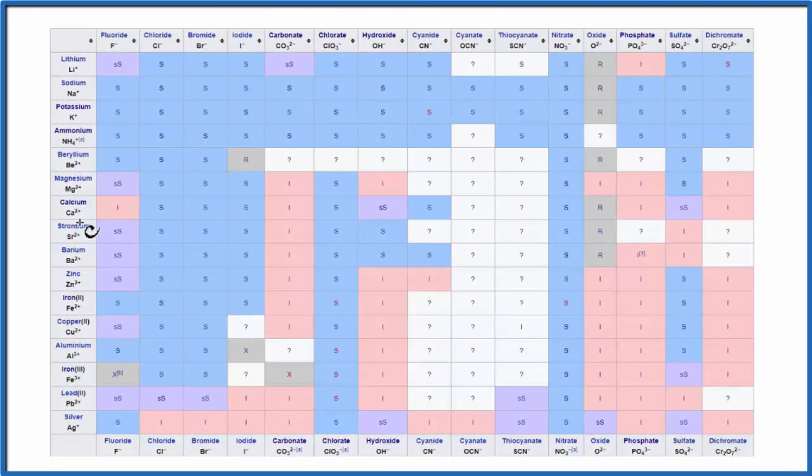Here's the solubility table, the positive ions are down here, the negative ions are on the top. So we're looking for iron 3, Fe3+. We go down here, here's Fe2, here's iron 3, Fe3+.